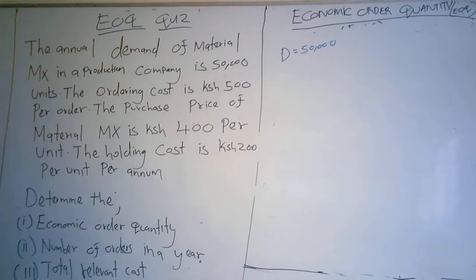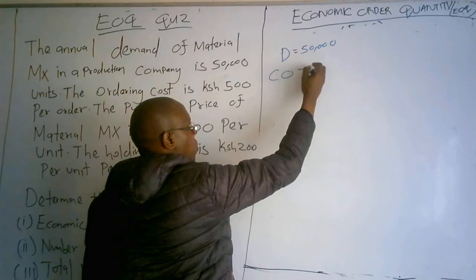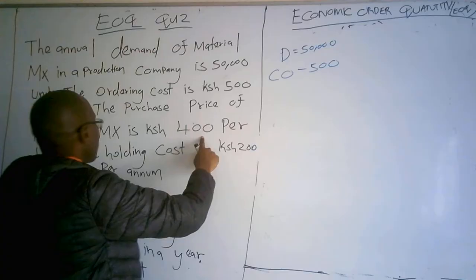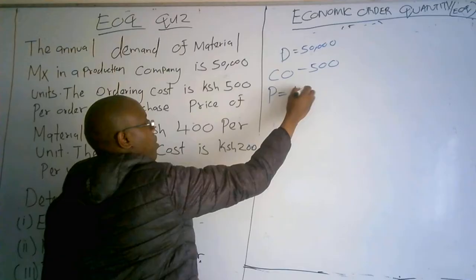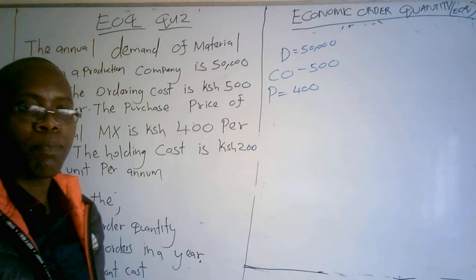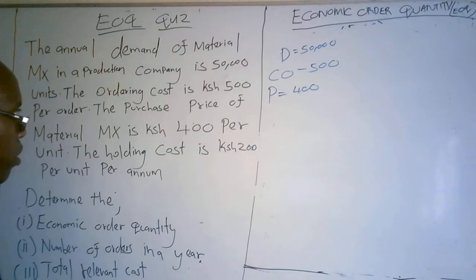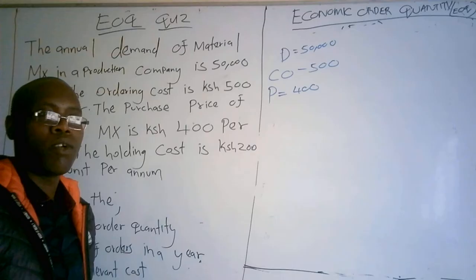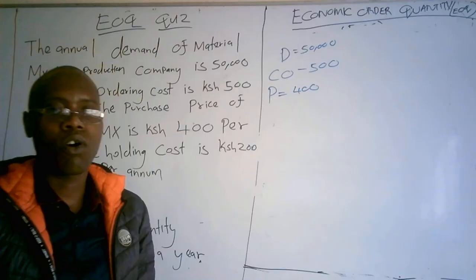The ordering cost is 500 shillings per order, so CO equals 500. The purchase price of material MX is 400 shillings per unit, so P equals 400. This purchase price will be relevant when calculating the carrying cost as a percentage of purchase price, or when calculating the total cost of inventory using D times P.